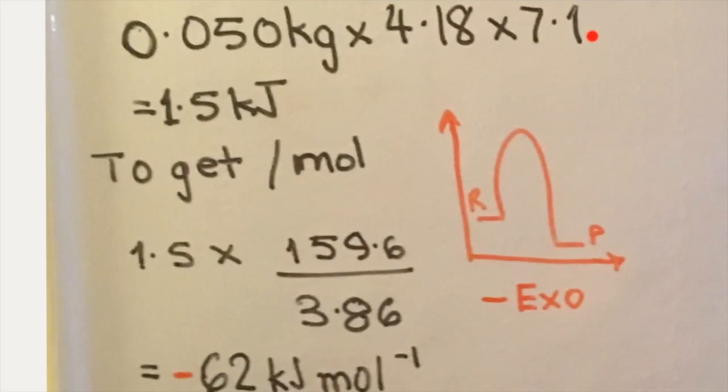So now with this value of 7.1 degrees, this increase of 7.1, we note that this particular reaction was exothermic. Because of this increase in temperature, it means that heat energy was released from the system into the surroundings. To solve for this enthalpy change, we multiply the mass of the water in the cup by the specific heat capacity of water by this change in temperature.